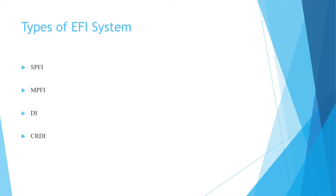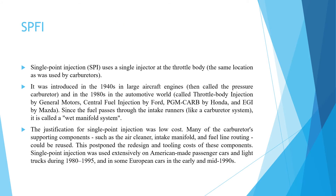The fuel injection systems are basically four types: SPFI or single point fuel injection system, number two is MPFI or multi-point fuel injection system, third is DI that is direct injection system, and fourth is CRDI, common rail direct injection system. Now let's start discussion on SPFI, that is single point injection system.